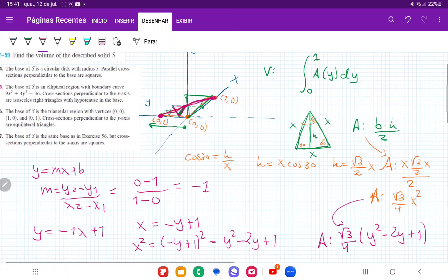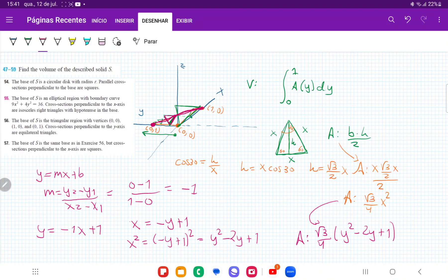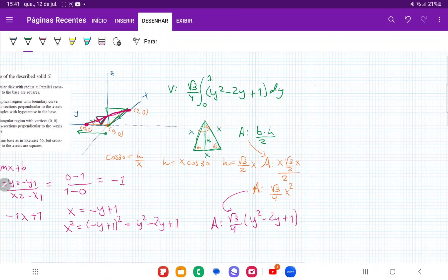So once we have this, we are ready to integrate. Basically, we just replace here A(y) dy. So I'm going to put the root 3 over 4 outside, and then that is y squared minus 2y plus 1, and all this times dy. So when we integrate this, we're going to get root 3 over 4 times (y cubed over 3 minus y squared plus y) evaluated from 0 to 1.